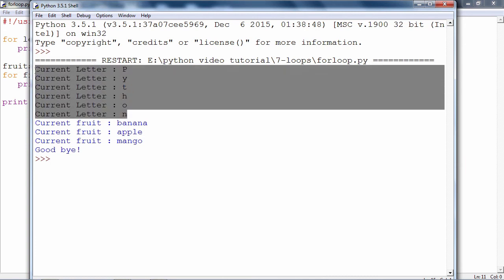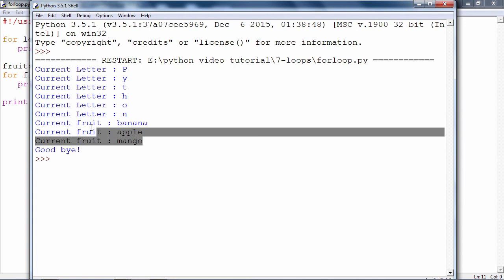So, this is the output of the first for loop, for letter in Python, and this is the output of the second loop, for fruit in fruits. Goodby is of course a statement out of the loop.